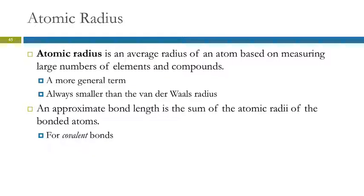So we're just going to think of this in terms of a very general term: atomic radius. This is an average based on measuring the radius in a number of different situations. This atomic radius is always going to be smaller than the van der Waals radius, because whenever you get a covalent bond, that squishes the atoms together and causes the radius to be a little smaller. The approximate bond length for covalent bonds is the sum of the atomic radii — for covalent bonds only.